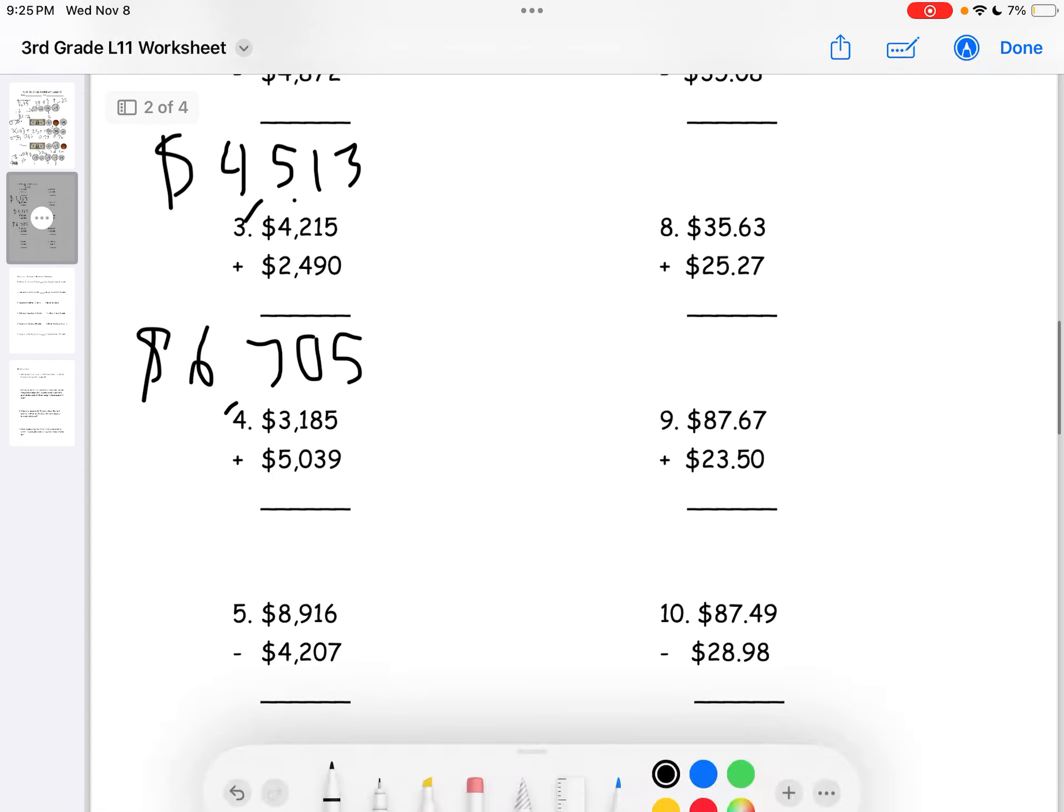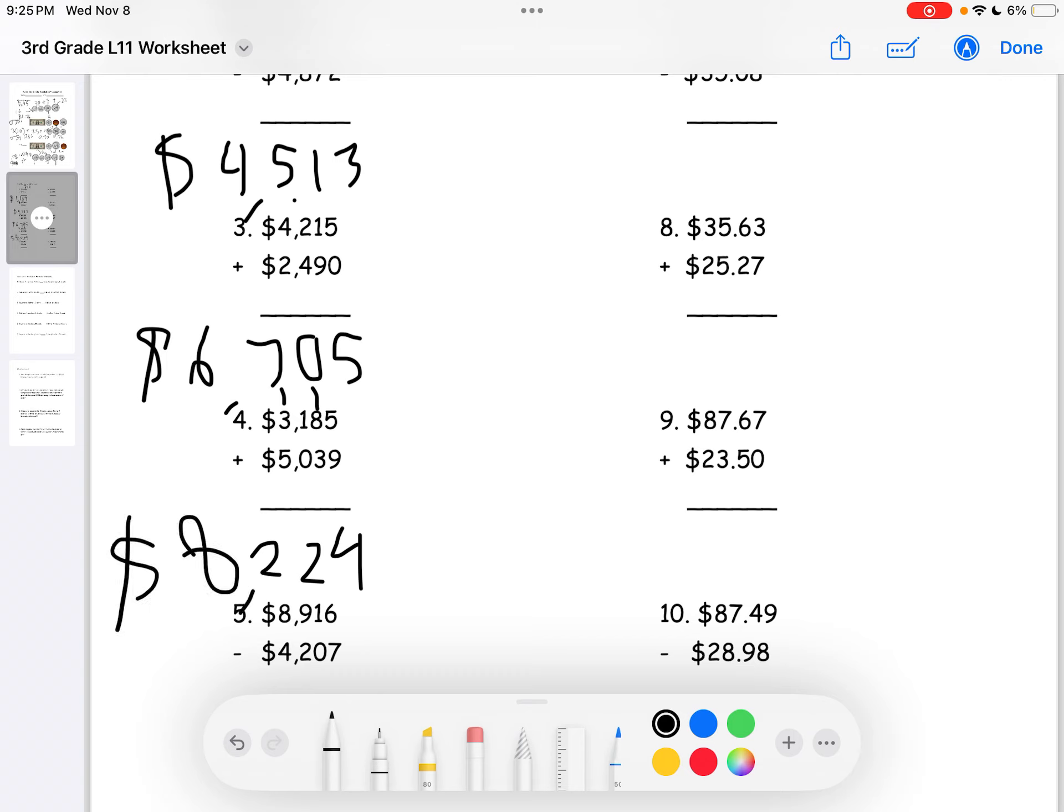Now, we'll do number 4 here. 5 plus 9 is 14. Put a 4 here. 1 here. It'll be 12. 12 put a 1 here. It'll be 2. 3 plus 5 will be an 8. So, the answer to question 4 will be $8,224.